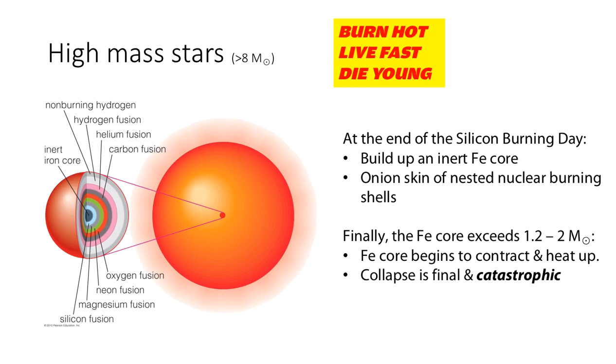Over the course of one day, the iron core builds a mass to about 1.2 to 2 solar masses.